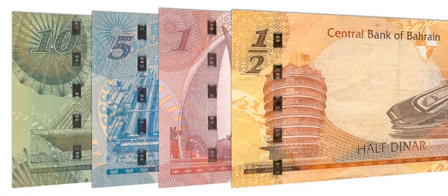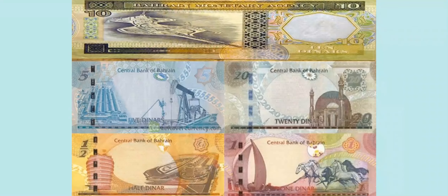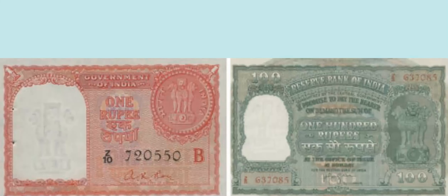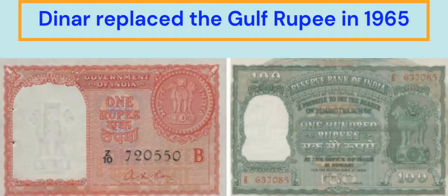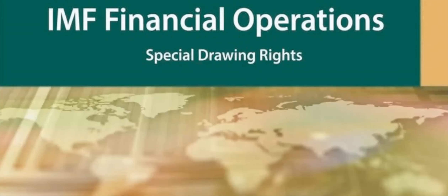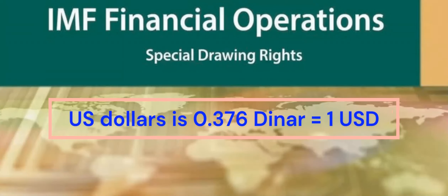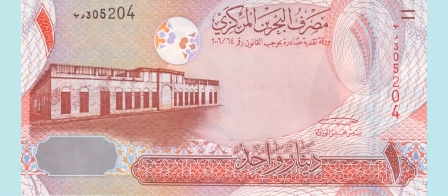About Bahraini currency: only Bahrain can use the currency, the BHD. Like other Arabic currencies, it is divided into 1,000 units. The Bahrain dinar replaced the Gulf rupee in 1965. The dinar was pegged to the IMF's Special Drawing Rights in 1980. The fixed rate for US dollars is 0.376 dinar equals 1 US dollar.